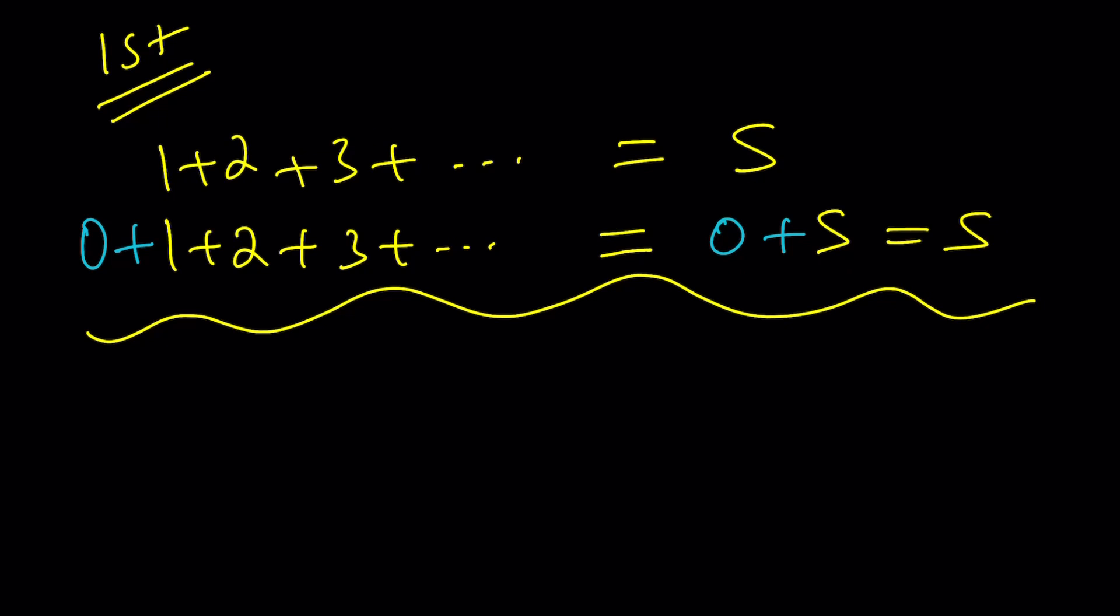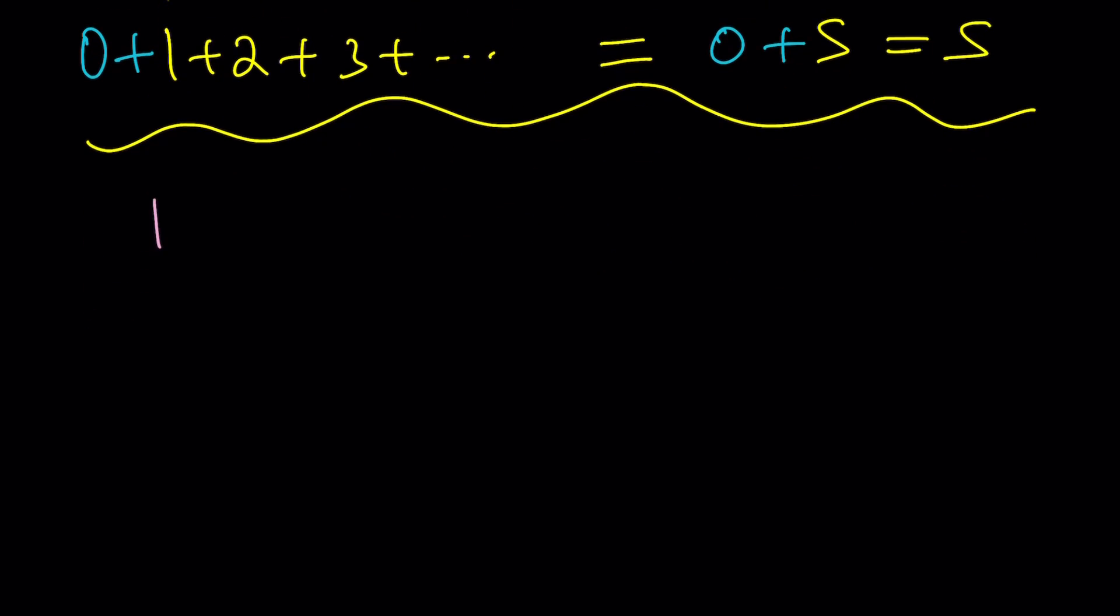So that 1 is aligned with 0, 2 is aligned with 1, and 3 is aligned with 2, and so on and so forth. And then this is also going to be S. As you noticed, 0 is the identity element. When we add it to anything, it gives us the same thing.